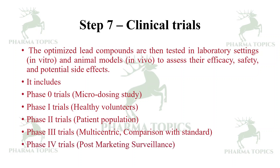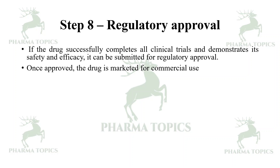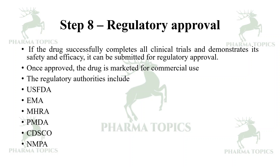Phase 4 is post-marketing surveillance. If the drug successfully completes all clinical trials and demonstrates safety and efficacy, it can be submitted for regulatory approval as an Investigational New Drug application. Once approved, the drug is marketed for commercial use. Regulatory authorities include the US Food and Drug Administration (FDA), European Medicines Agency (EMA), the Medicines and Healthcare products Regulatory Agency (MHRA), the Pharmaceuticals and Medical Devices Agency (PMDA), India's CDSCO (Central Drugs Standard Control Organisation), and China's National Medical Products Administration, among others that vary by country or region.